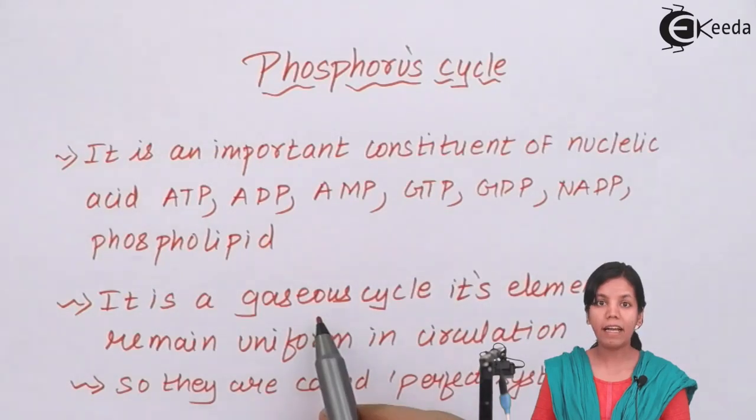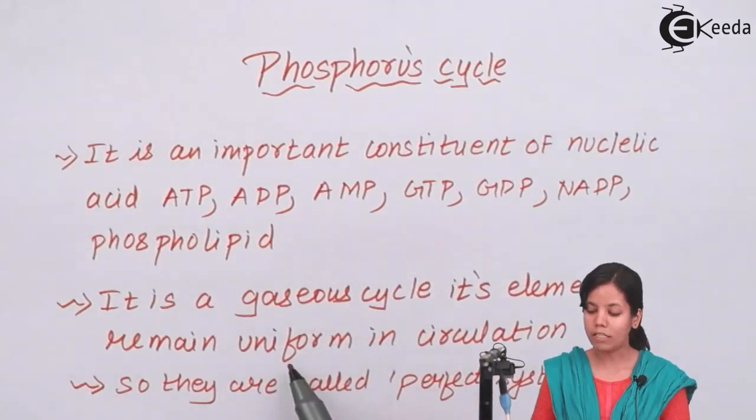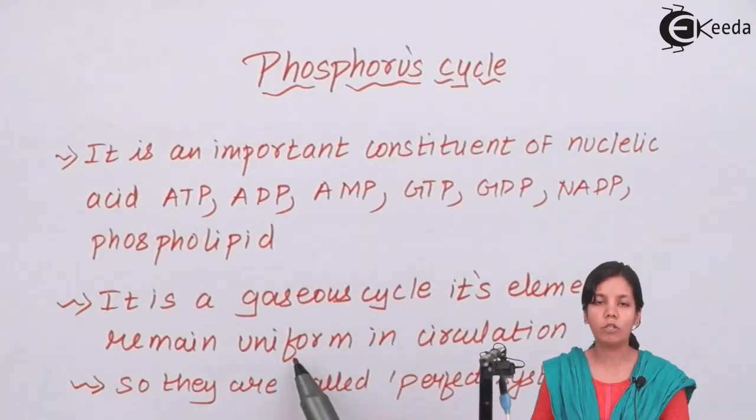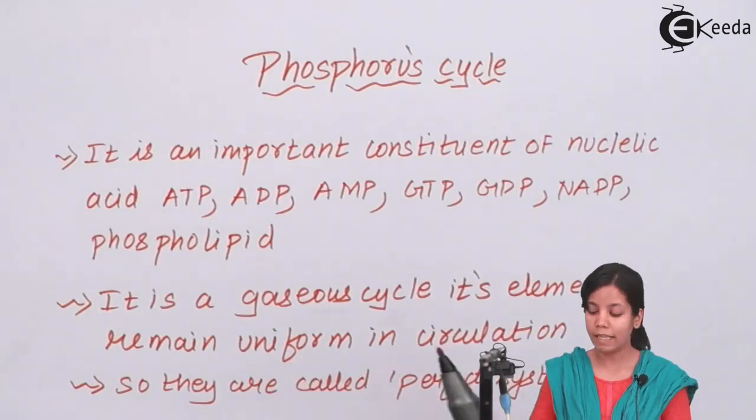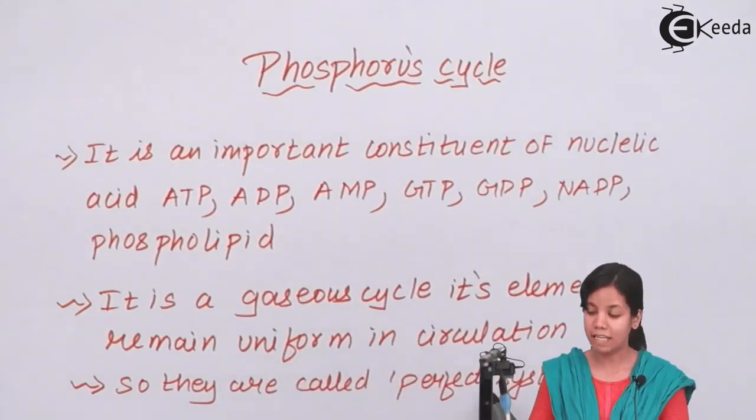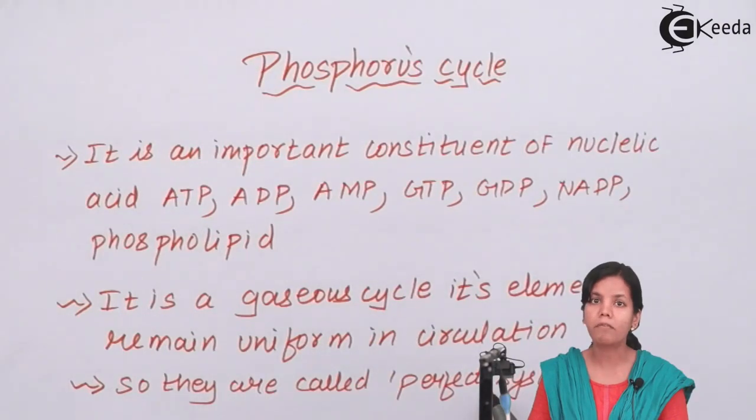Phosphorus cycle is basically a gaseous cycle and all its components remain in circulation during different phases. That is why phosphorus cycle is called as a perfect system or perfect cycle.